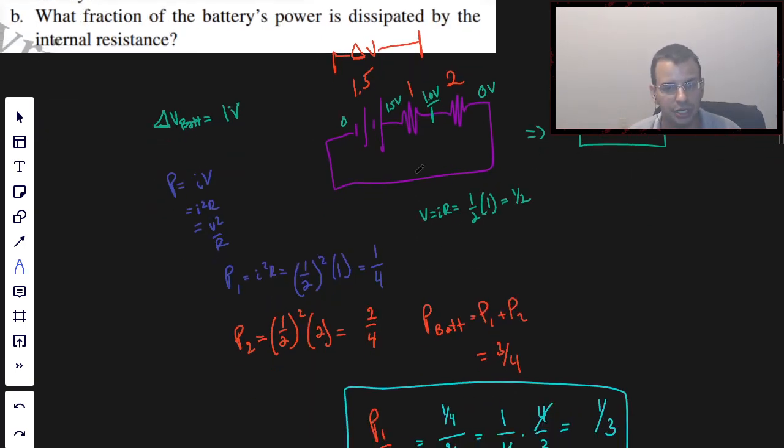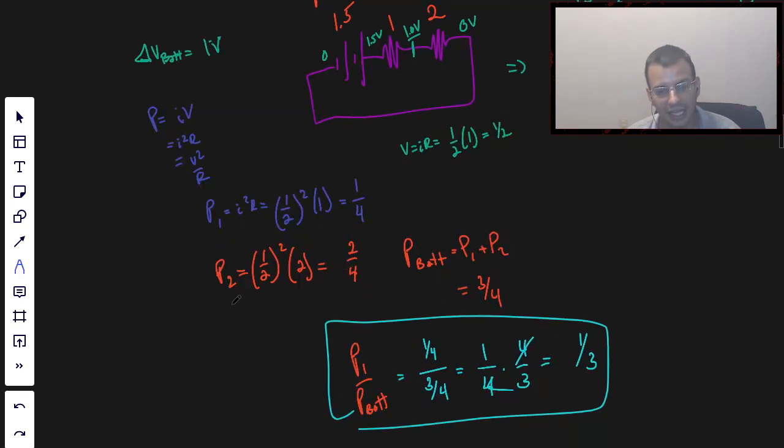We then looked into powers. Since we already knew the current going through each resistor and we knew the resistances, we could use I squared R. When we rewrite the power formula, we're just using Ohm's law. We did the math, it worked out, and we found 1 third. Hope that helped, see you next time.